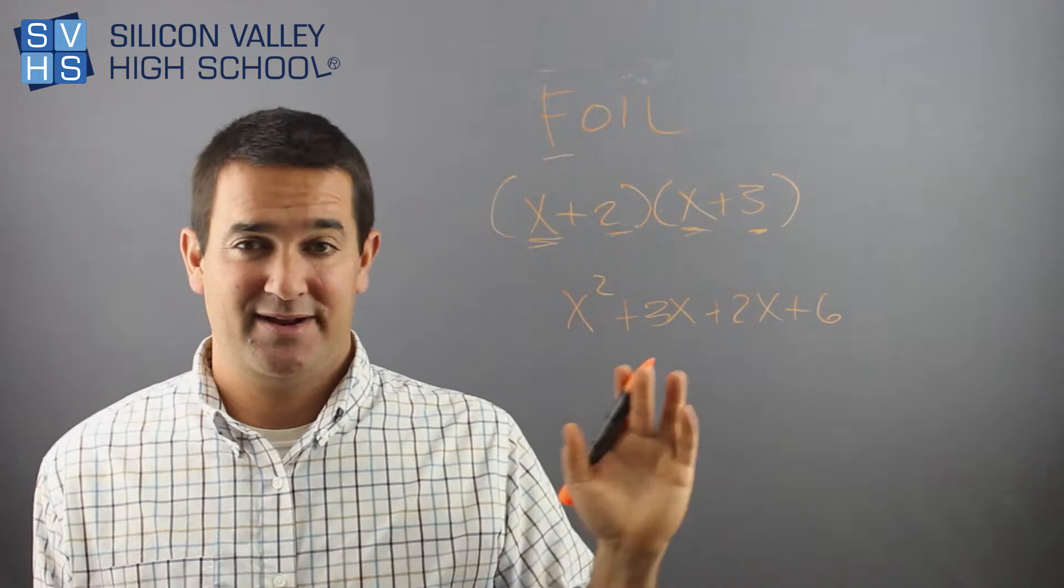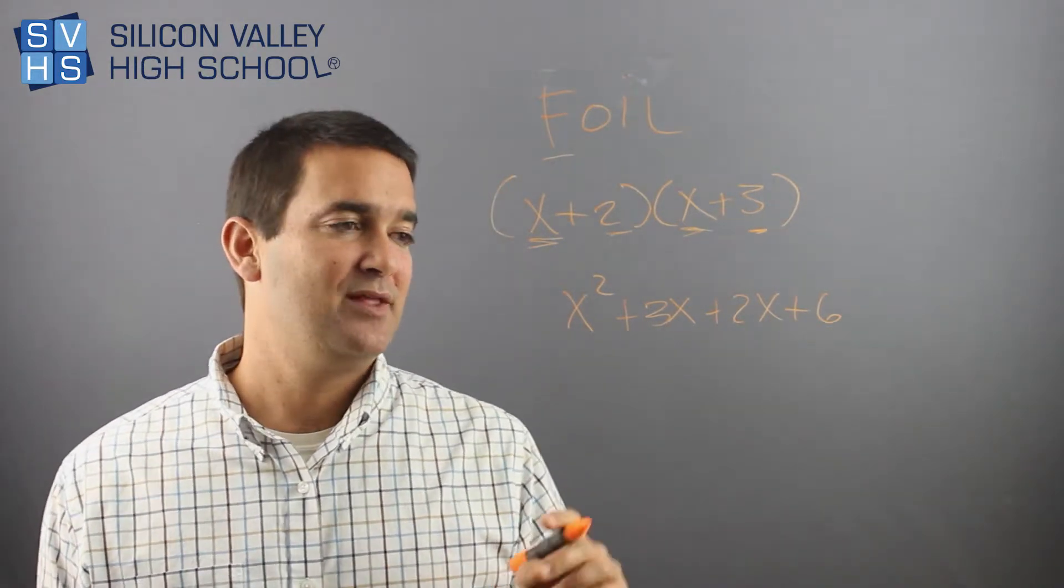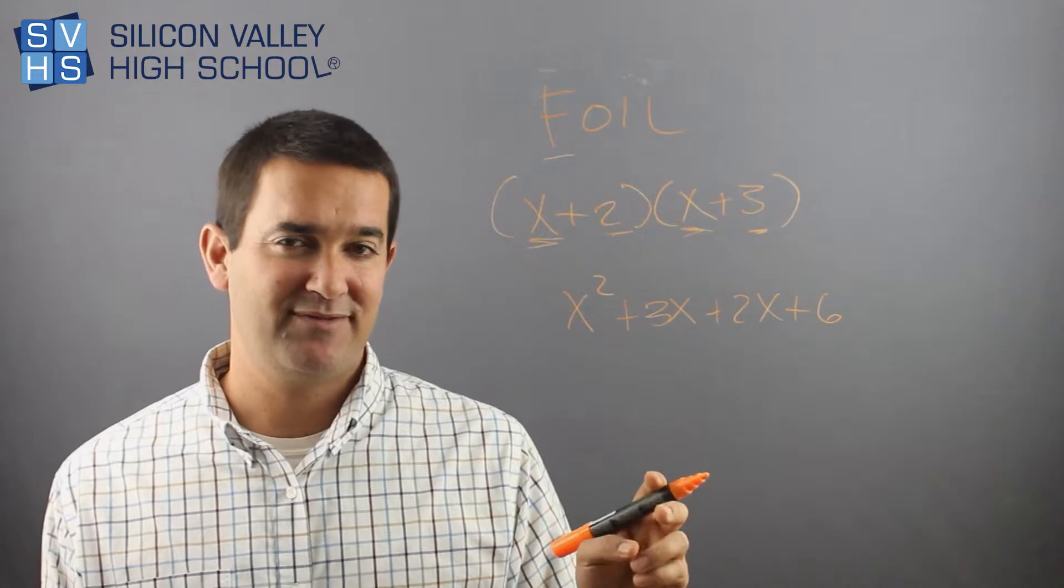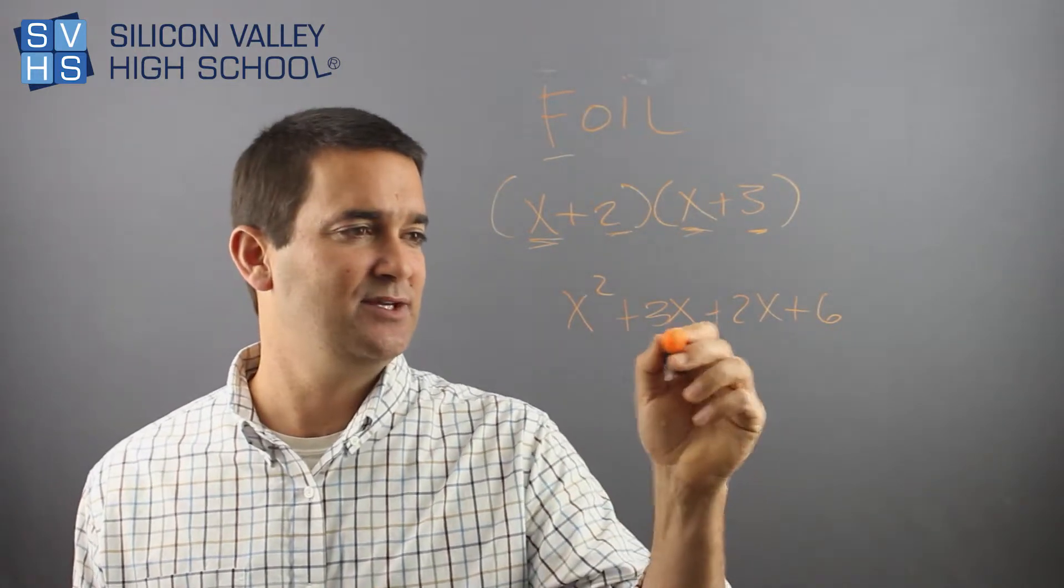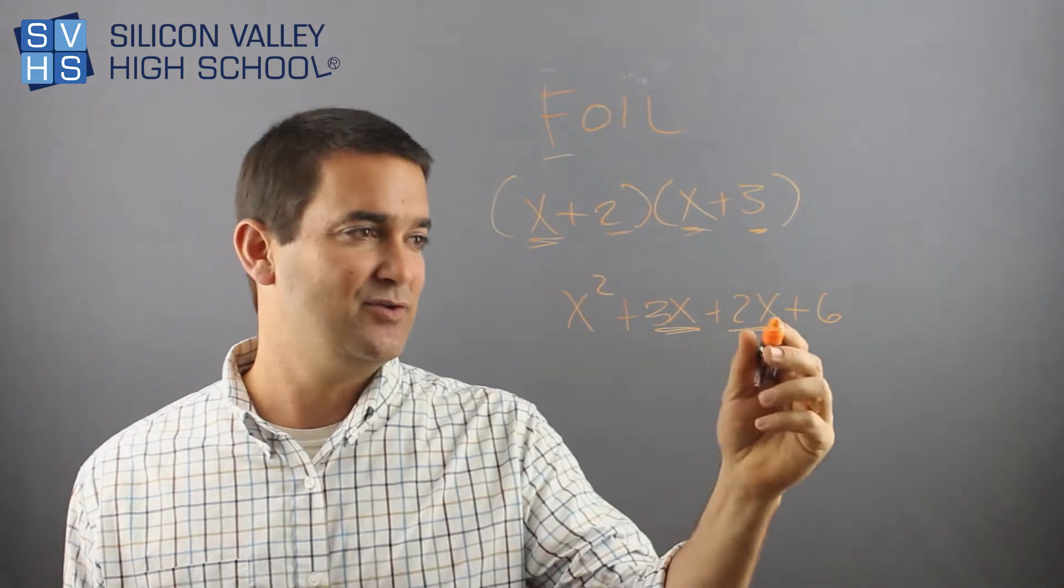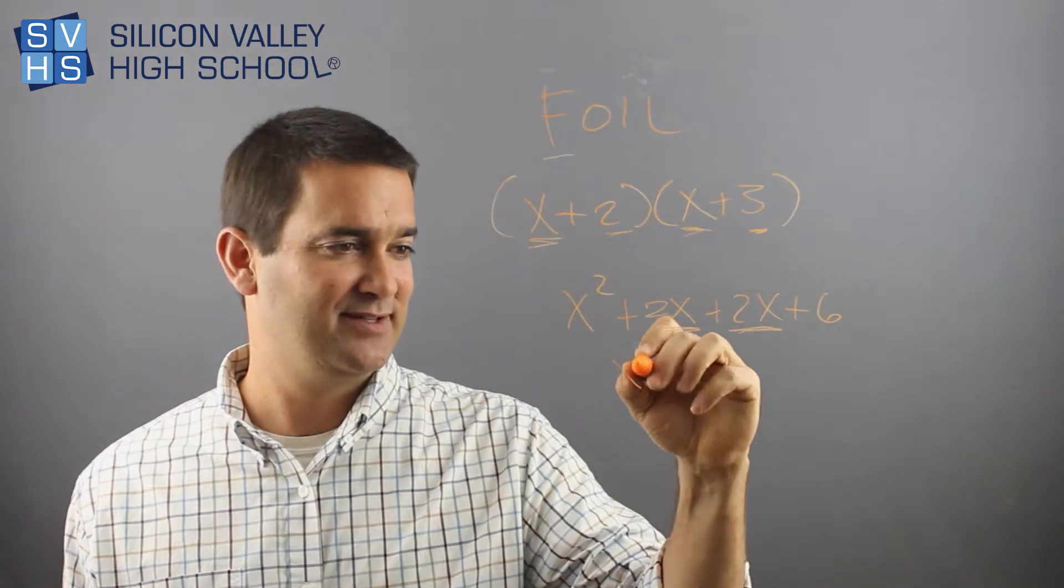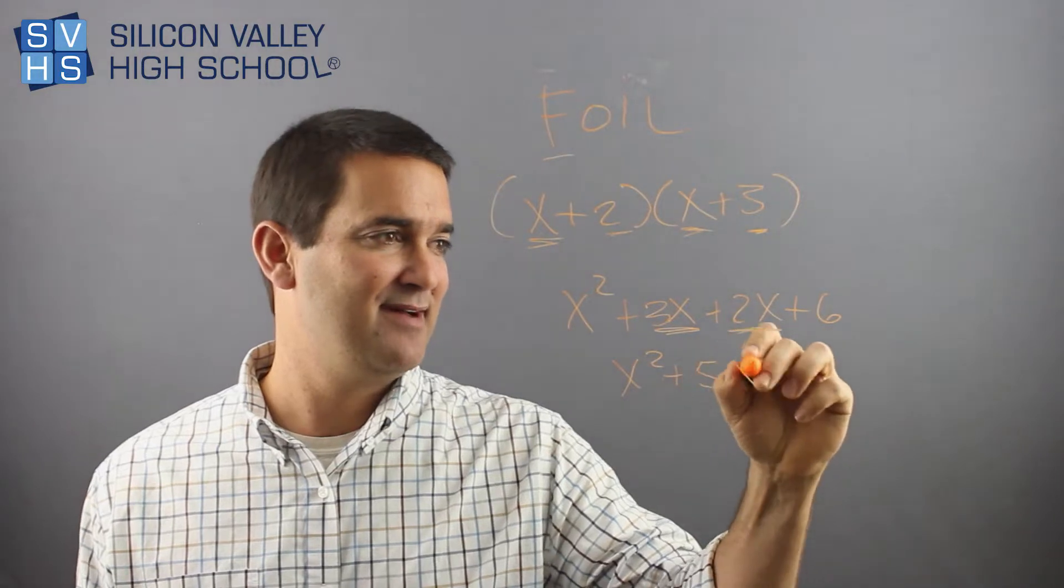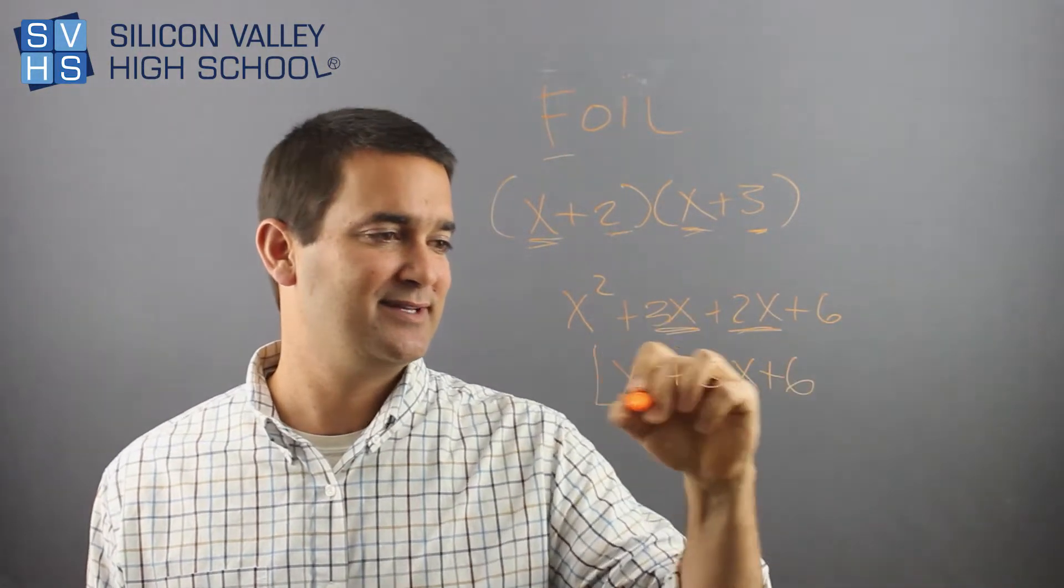Right? And then you're done. That's foiling. It's pretty mellow. The one thing is that in almost every case when you foil, these two guys, these inside guys, are usually like terms. So you can add them, and you have to add them to simplify. So this would be X squared plus, in this case, 5X plus 6, and you're totally done.